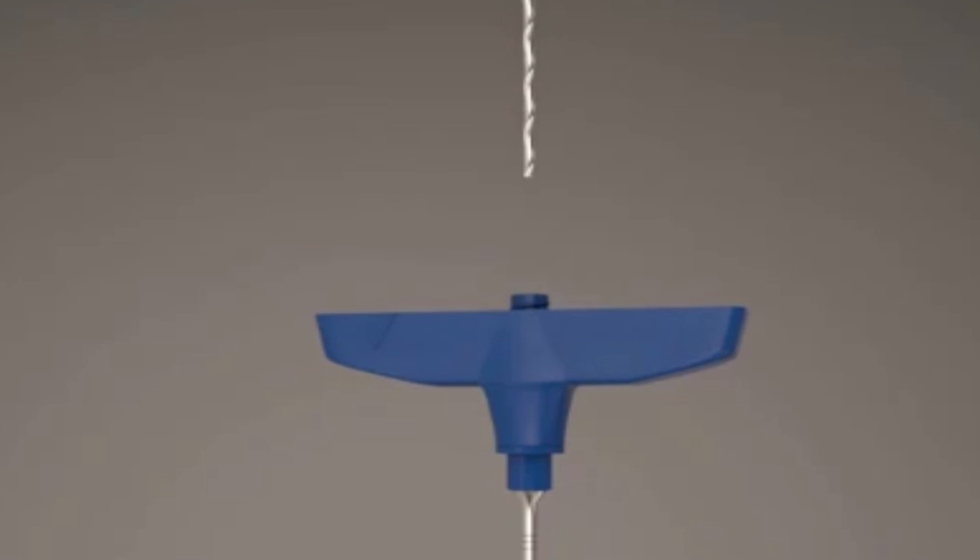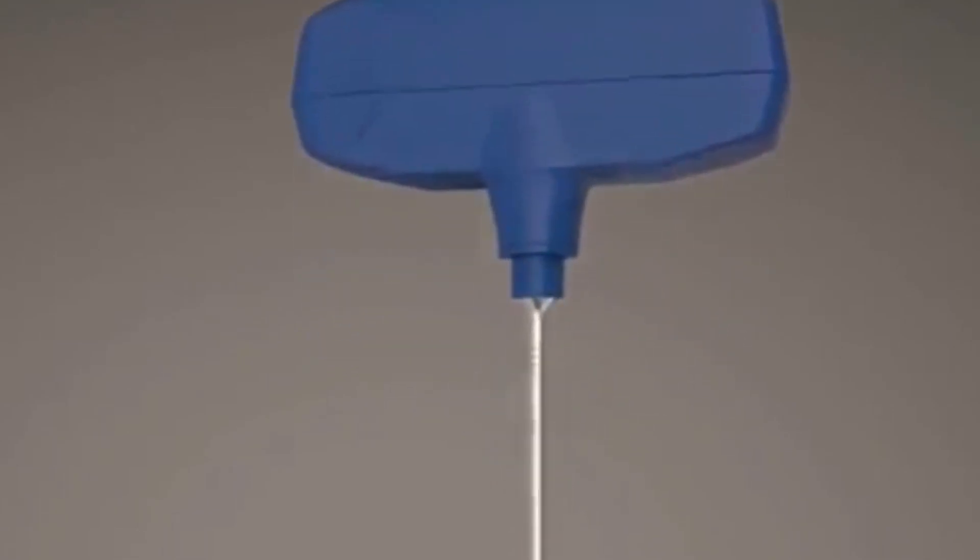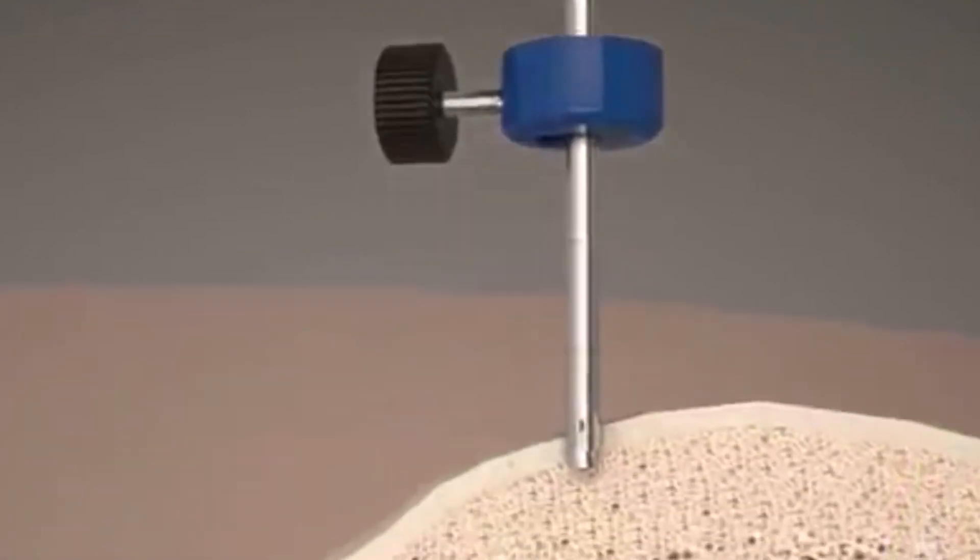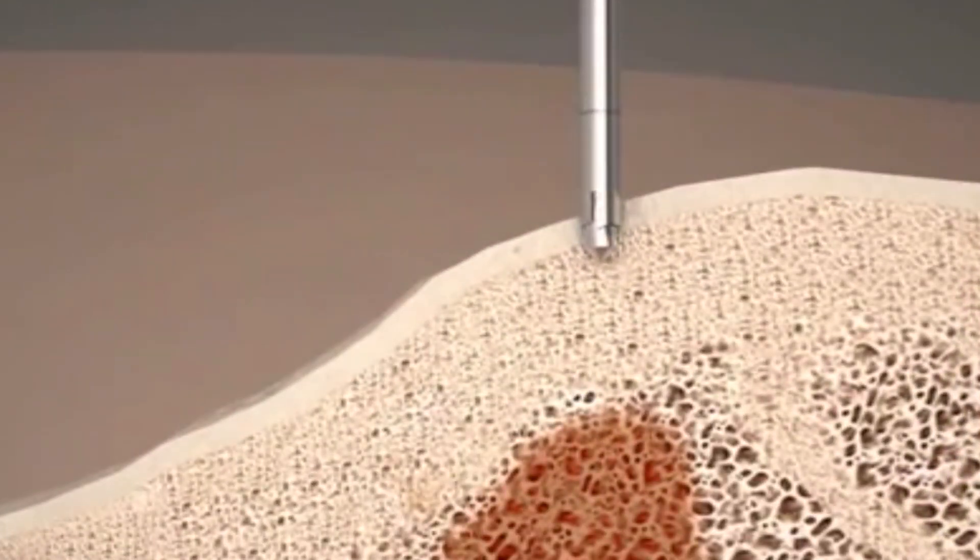The drill is now inserted into the cannula. After aligning the triangular impressions on the handles, the drill is locked into place. With firm, but not excessive, pressure, the assembled drill introducer is advanced clockwise through the cortex.